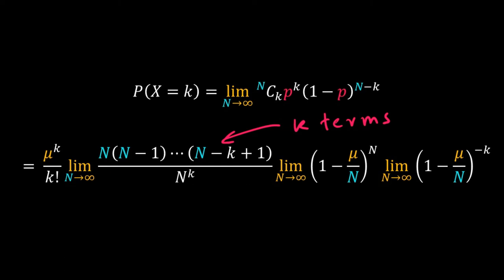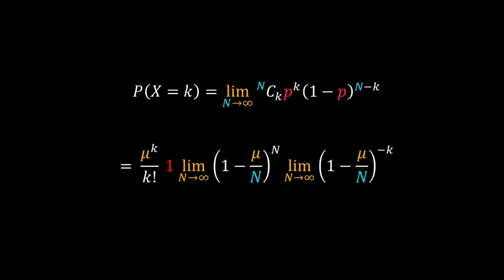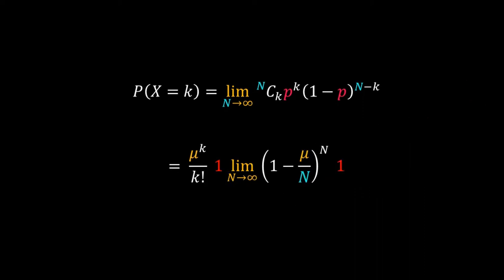When n tends to infinity, (1 - μ/n) to the power n equals e to the power minus μ, and (1 - μ/n) to the power minus k equals 1. That brings us to a reduced form for the probability.